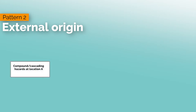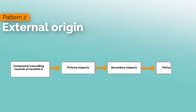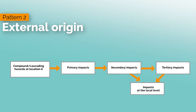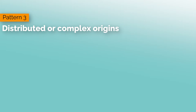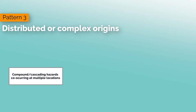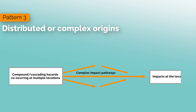The second pattern of multi-hazards is when they have an external origin. When compound or cascading hazards happen at a distant location, the primary, secondary, or tertiary impacts will cascade or simultaneously spill over to the local level. The third pattern is when multi-hazards have distributed or complex origins. When combined or cascading hazards occur at multiple locations, the impacts influence each other in very complex ways, and different impacts will happen in different places at the local level.